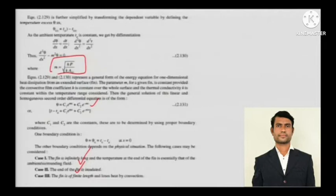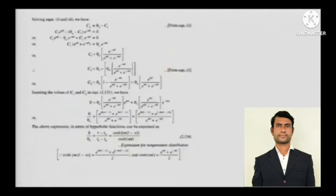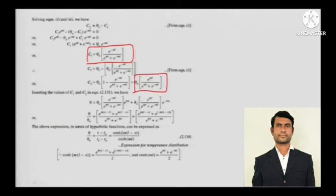Applying these boundary conditions to the general solution of the second-order differential equation: you solve it step by step. C2 equals theta₀ minus C1, and C1 works out to theta₀ times e^(−mL) divided by [e^(mL) + e^(−mL)]. Then you substitute the values of C1 and C2 back into the general solution and rearrange.